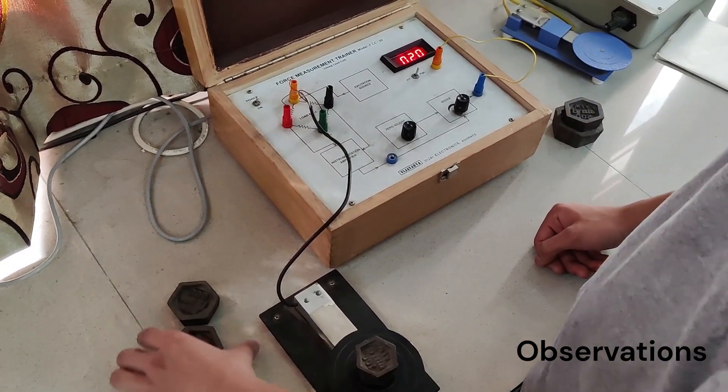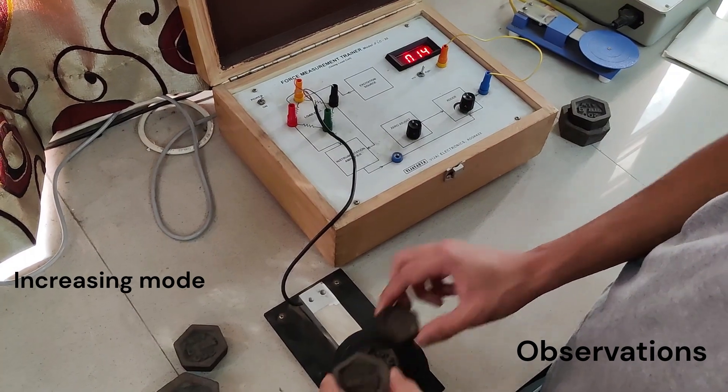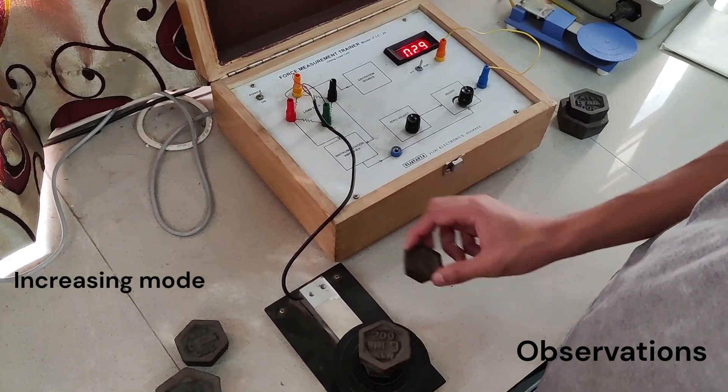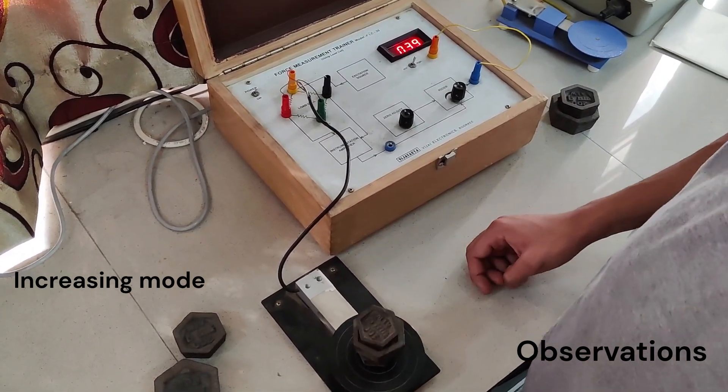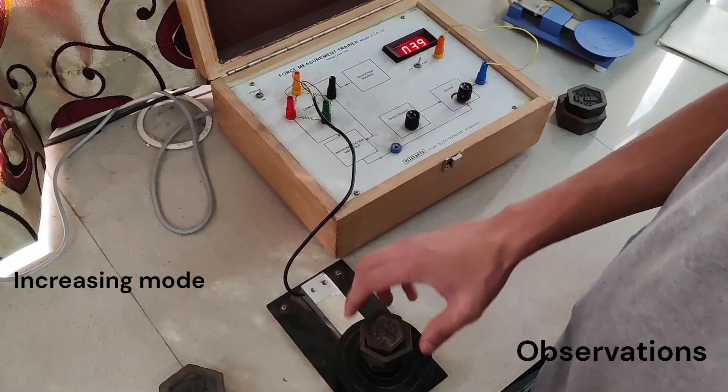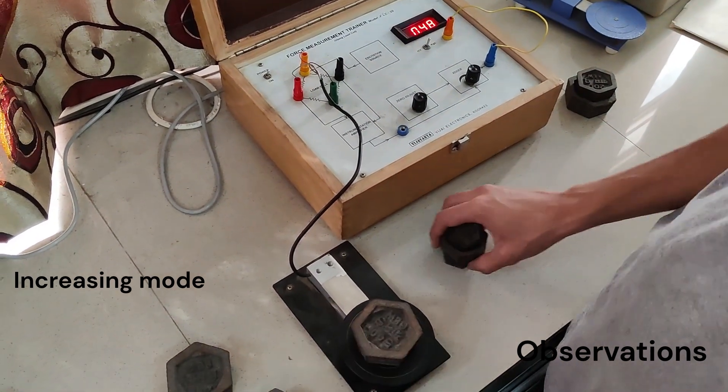Now that the load cell is calibrated, take readings in increasing mode and decreasing mode. In each mode, increment or decrement by 100 grams.